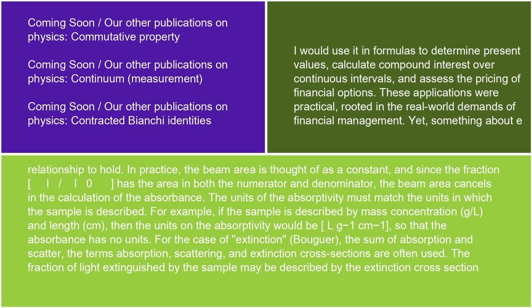The units of the absorptivity must match the units in which the sample is described. For example, if the sample is described by mass concentration (g/L) and length (cm), then the units on the absorptivity would be L·g⁻¹·cm⁻¹, so that the absorbance has no units. For the case of extinction (Bouguer) — the sum of absorption and scatter — the terms absorption, scattering, and extinction cross-sections are often used.